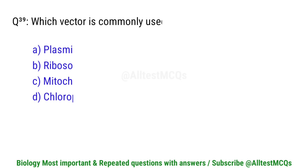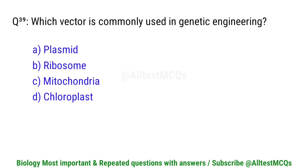Question number 39. Which vector is commonly used in genetic engineering? Correct option is A. Plasmid.